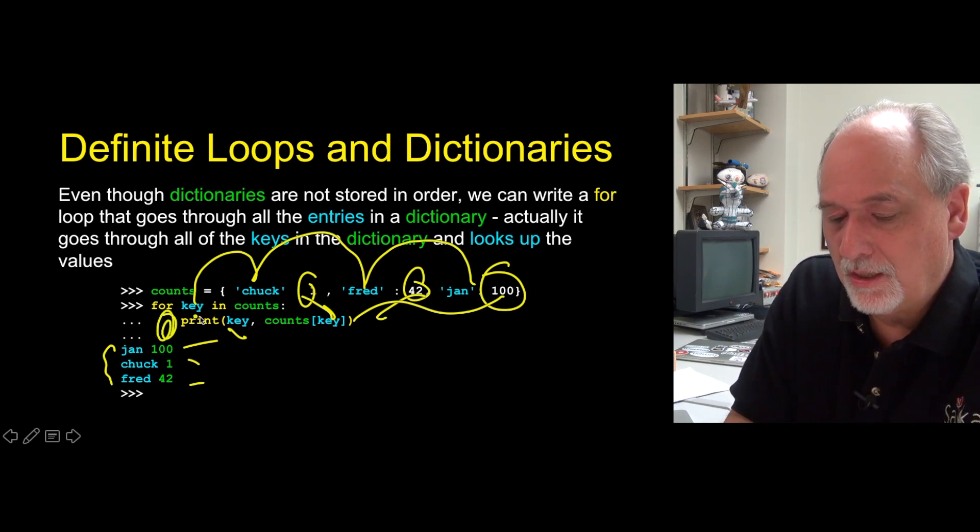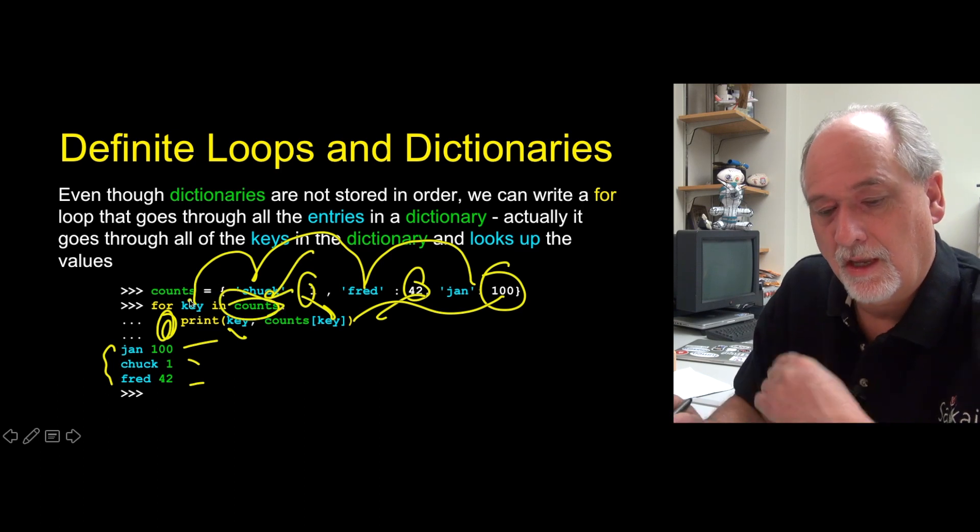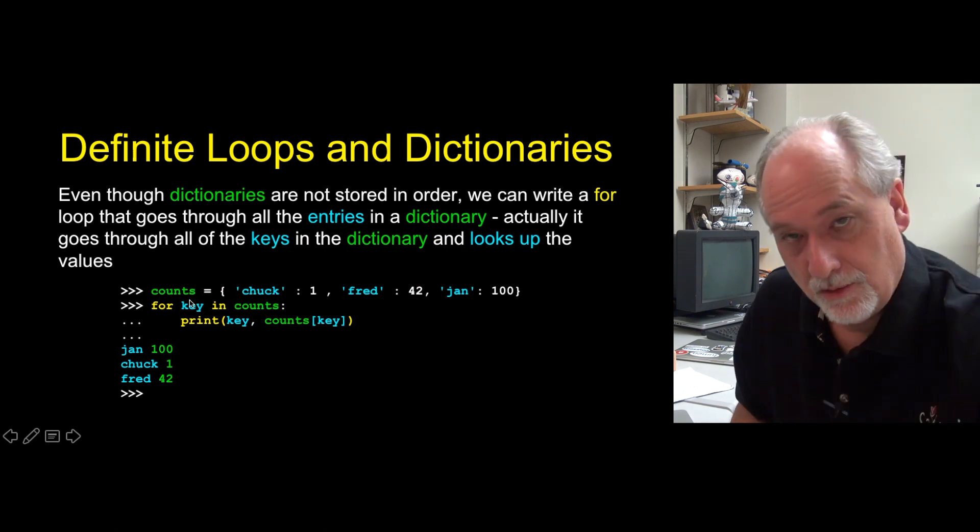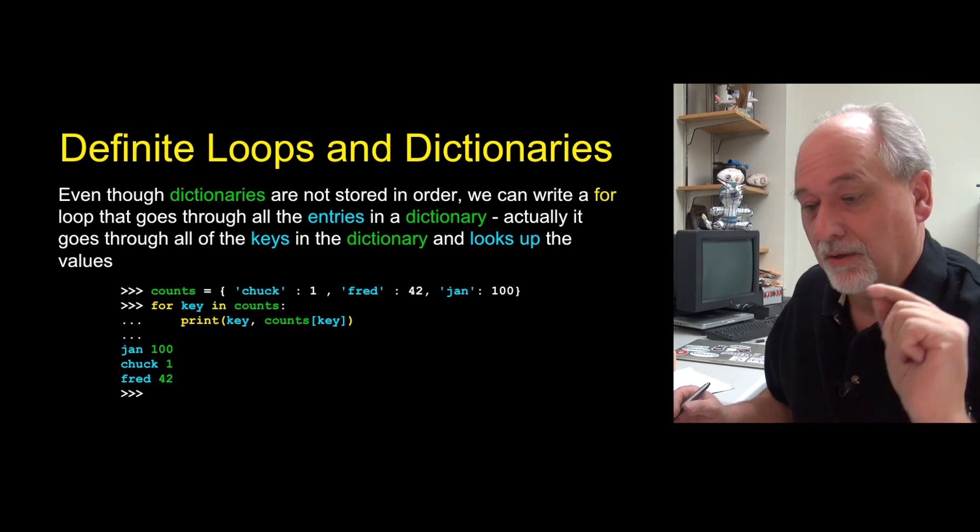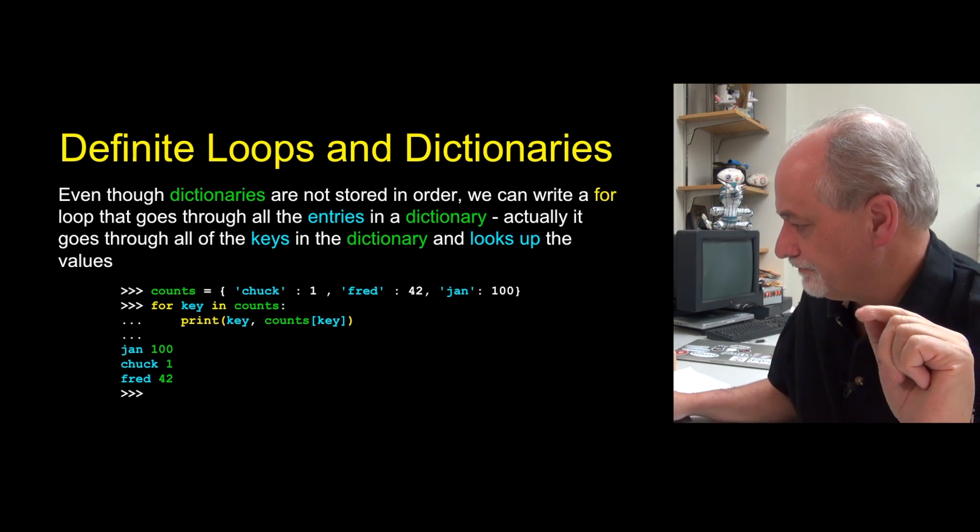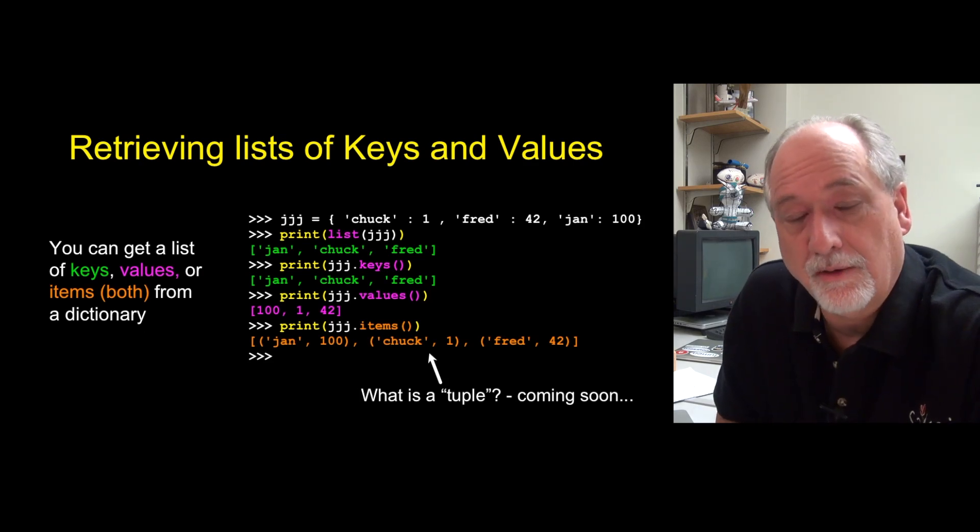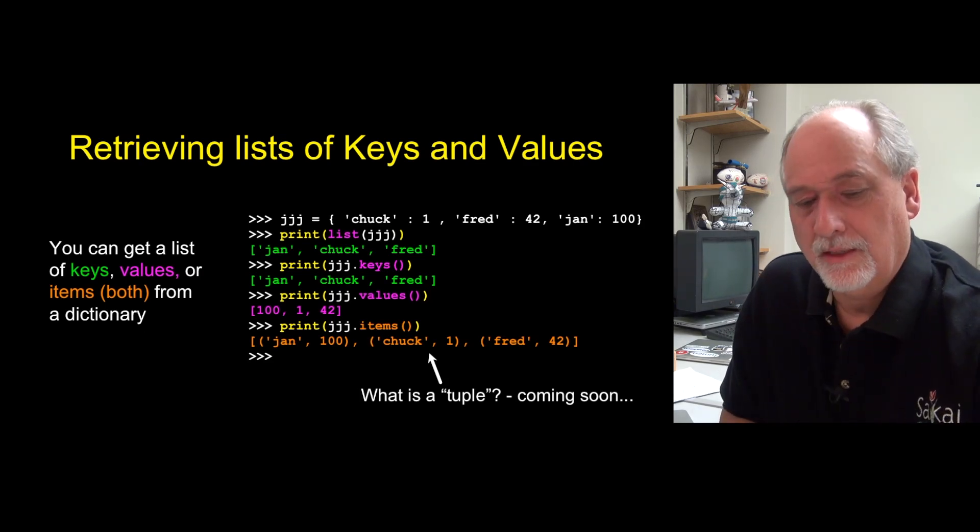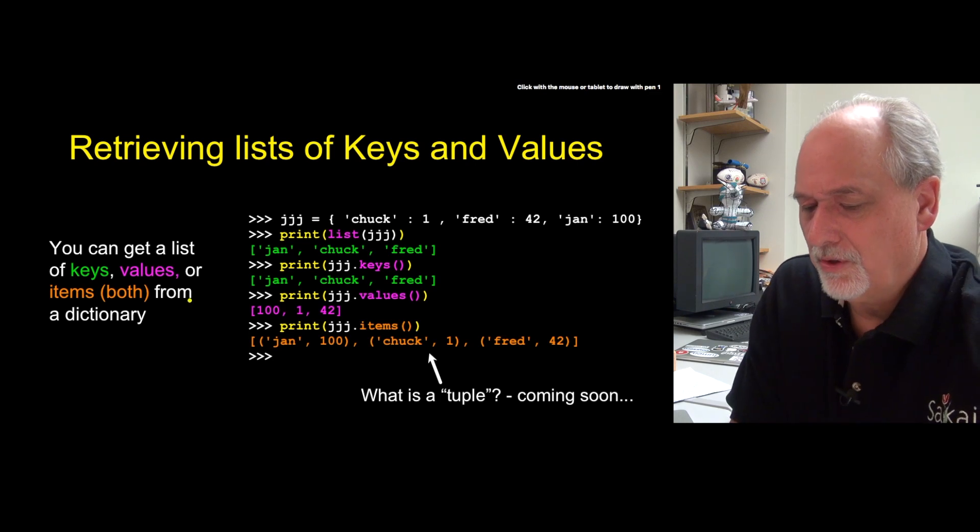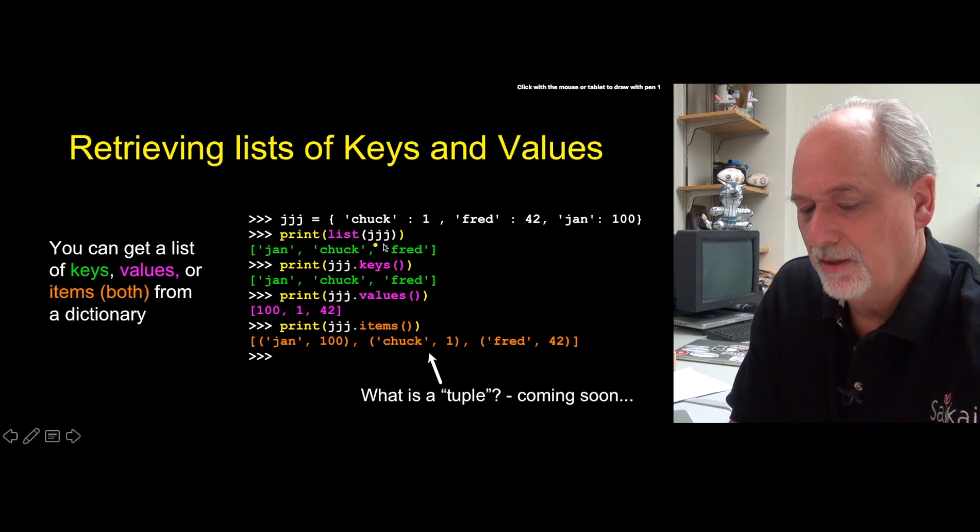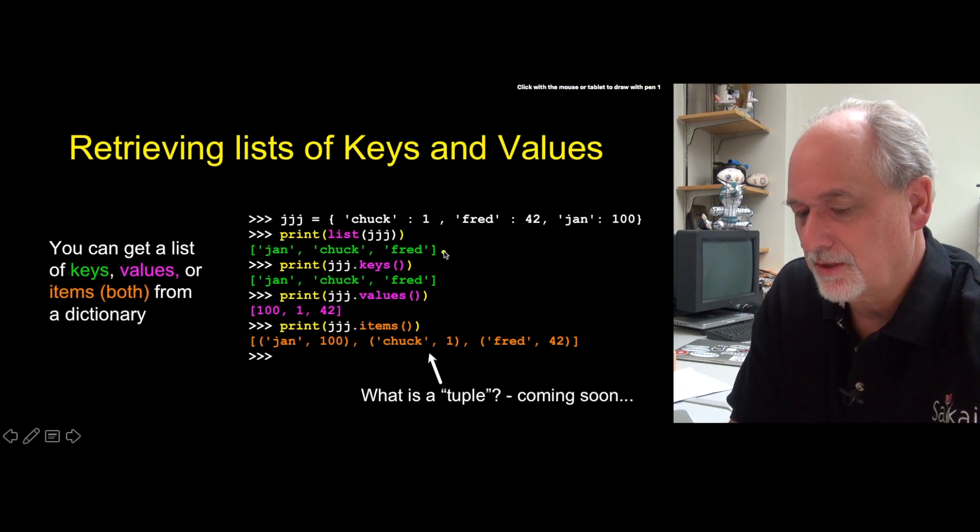So if you just use the in and you give a dictionary here, remember all the different things we've been able to put there on the end of a for loop. And dictionary's another thing we can put on and we get a list of keys. Now there's a couple of methods that allow us to get the keys. And so we have, you know, we can say turn this into a list. And we get a list of the keys.